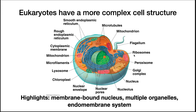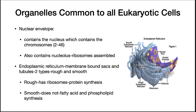I'll finish up these lectures by briefly mentioning eukaryotic cell structure. Eukaryotic cells are more complex and have multiple membrane-bound organelles, as well as an endomembrane system. Organelles common to all eukaryotic cells include the nucleus — the nuclear envelope contains up to 46 chromosomes, and inside is the nucleolus, where ribosomes are assembled. The endoplasmic reticulum is a series of membrane-bound sacs and tubules connecting to the nucleus, with two types: rough ER, decorated with ribosomes and the site of exported protein synthesis, and smooth ER, the site of fatty acid and phospholipid biosynthesis.